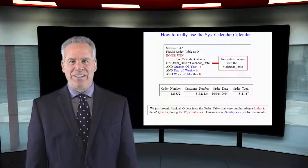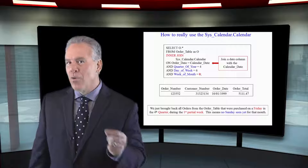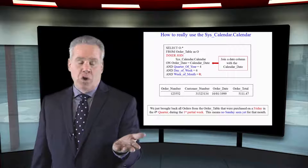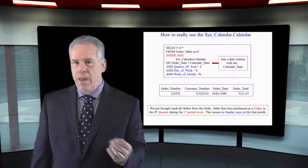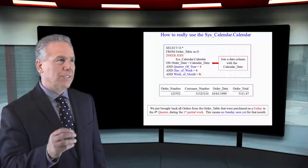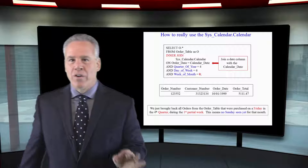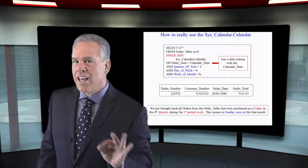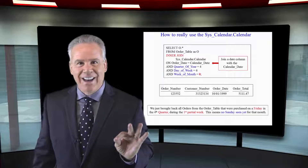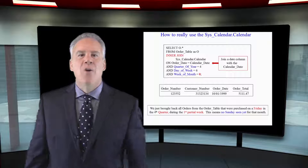Can you imagine if the boss came to you and said, I want to see all orders in the fourth quarter that happened on a Friday, where no Sunday had yet been seen in the month — and you go, I'm not going to be able to get that. Watch this brilliant query.